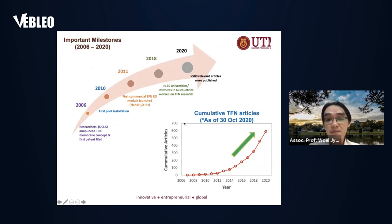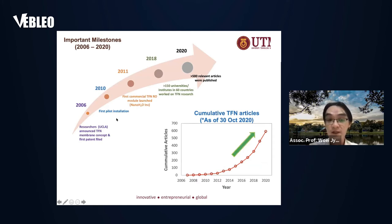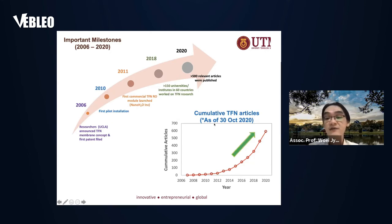There are several important milestones throughout the years since the first TFN membrane was reported. In 2006, one year before the first technical paper was published, the researcher filed a patent in the United States. In 2010, there was a first pilot installation of the TFN membrane. In 2011, the first commercial TFN membrane was launched. By 2018, more than 150 university institutes in 60 countries were working on the TFN membrane. As of October 2020, there are more than 500 articles related to thin film nanocomposite membranes, with a sharp increase in publications over the past five years.